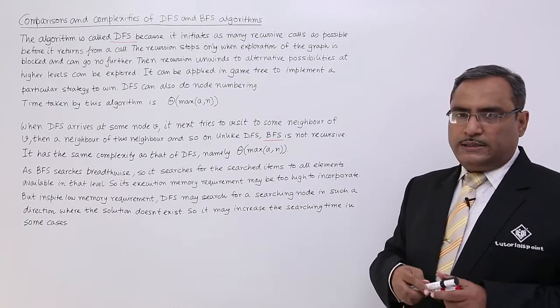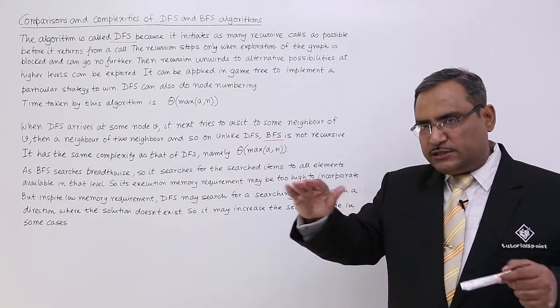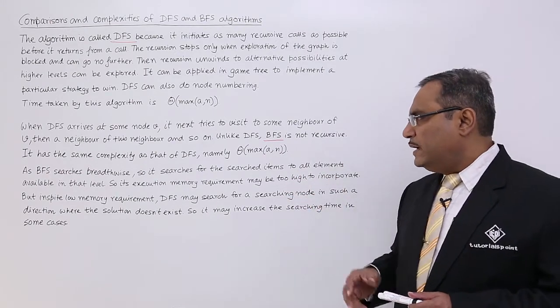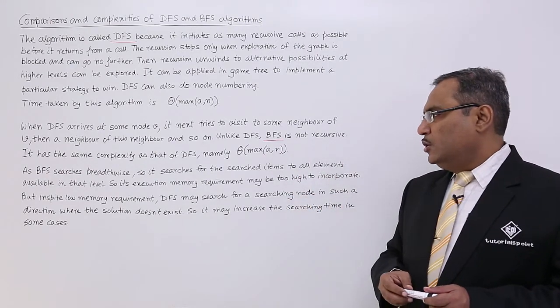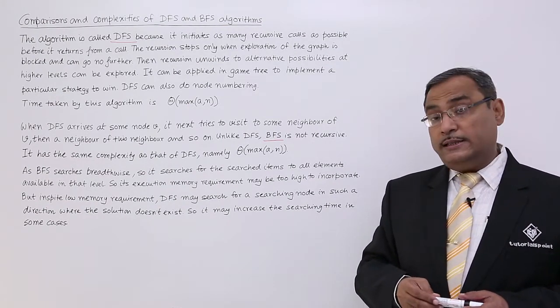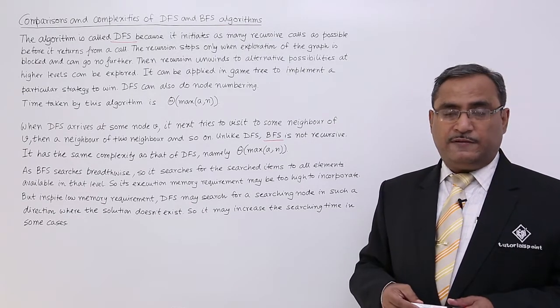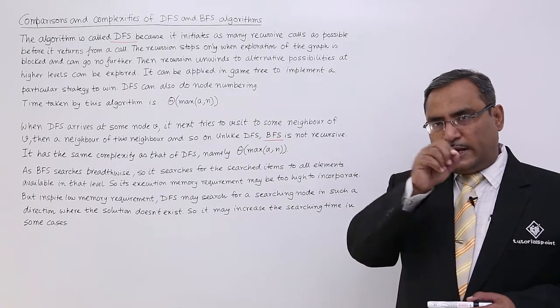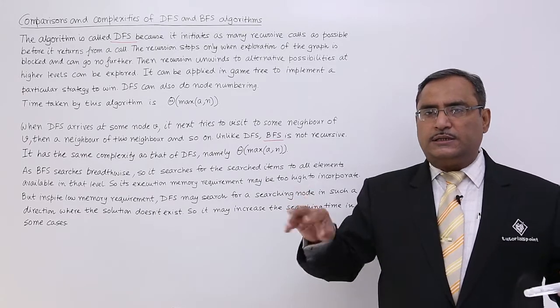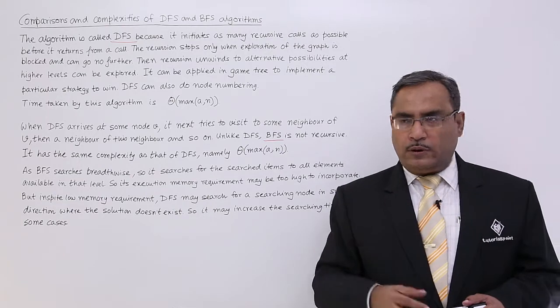As BFS searches breadth-wise, the graph will be searched in the breadth-wise. It searches for the search node to all elements available in that level. Its execution memory requirement may be too high to incorporate, and that is the main disadvantage for the BFS. Because if certain node has got so many neighbors, then it will keep the traces of all these neighbors in the queue. In our queue data structure, it will go on keeping. All neighbors at that particular level will be kept in the queue for further explorations.